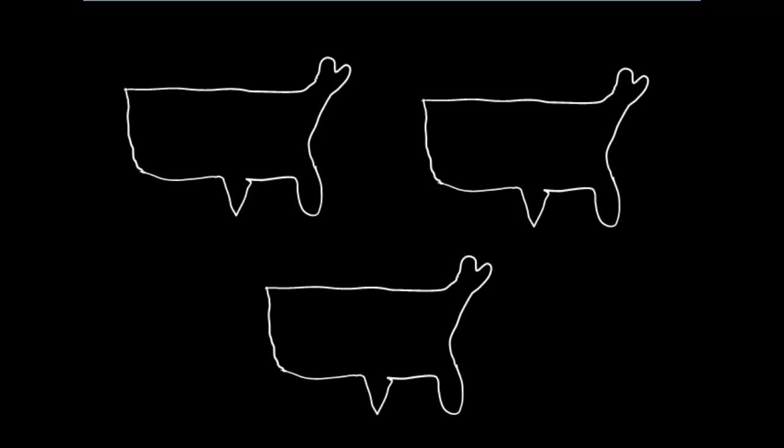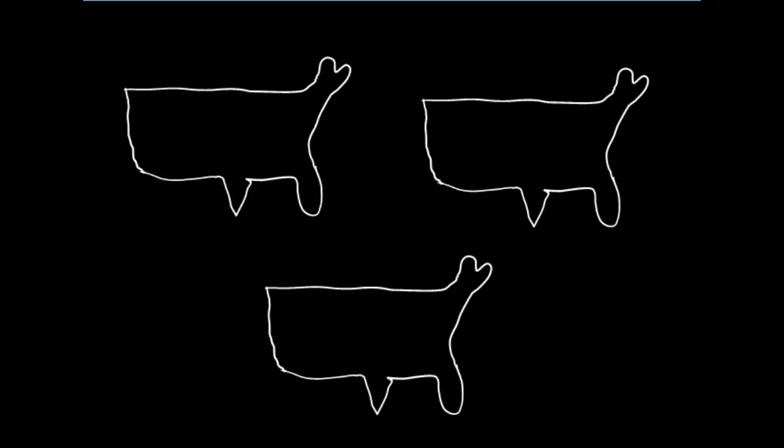When you think about a cause, you always have to have a particular population in mind. For this example, let's use the population represented by the NHANES data, which is the non-institutionalized United States population. Let's think about a cause we're all familiar with: smoking cigarettes causes lung cancer. What would it mean in this framework to say that smoking cigarettes causes lung cancer?